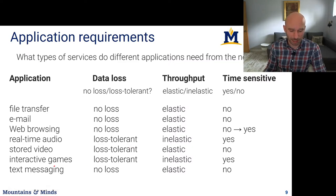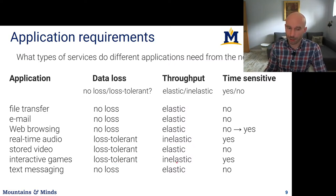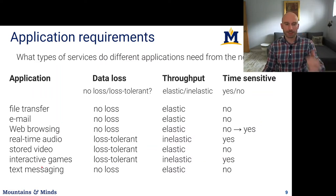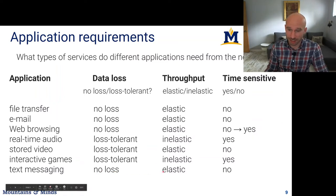Interactive games — like a real-time shooter — are loss-tolerant: you don't need to receive every position update, though more updates mean less teleporting in the game. But throughput is relatively inelastic — there's some amount of updates that must be delivered at fixed intervals, like a position update every so many milliseconds. And it is time-sensitive: delivering a position update five seconds late doesn't help because you can't incorporate it into the visualization. Text messaging would tolerate no loss, but it is elastic in terms of throughput and not particularly time-sensitive.